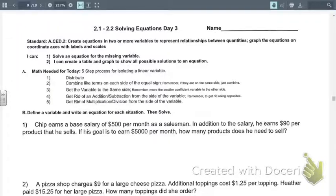Number 1 says that Chip earns a base salary of $500 per month as a salesman. In addition to the salary, he earns $90 per product that he sells. If his goal is to earn $5,000 per month, how many products does he need to sell? The directions say to define a variable and write an equation for the situation and then solve.